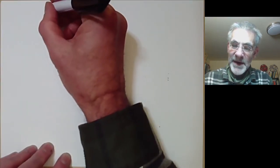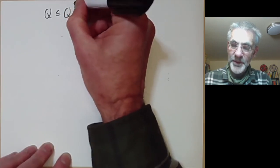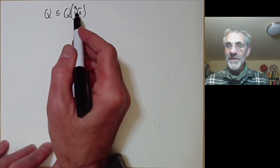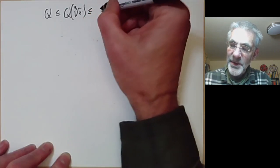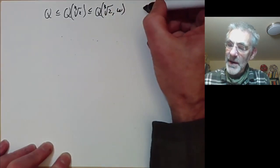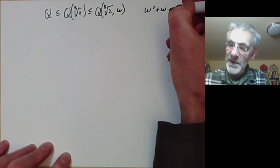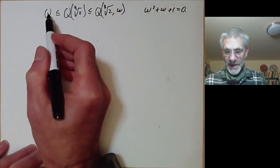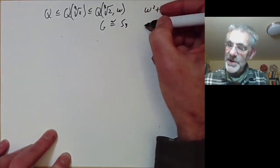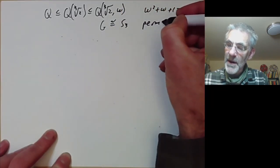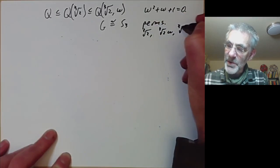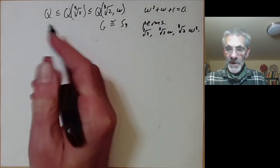Let's do a slightly more interesting example. Take the field Q contained in Q with the cube root of 2 added. As we saw earlier, this isn't actually a Galois extension because the other cube roots of 2 aren't in it, so we extend it by adding ω, a primitive cube root of unity where ω² + ω + 1 = 0. This is now a Galois extension and its Galois group G is isomorphic to S3, the group of permutations of the three cube roots of 2: ∛2, ∛2·ω, and ∛2·ω².